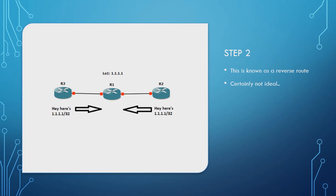In RIP, Router 1 has a metric of 0 to 1.1.1.1/32. When it receives advertisements from Router 2 and 3 with a metric of 1, it will never use those paths because it already has a better metric of 0 locally — so that's not an immediate issue. The problem arises in more complex situations: imagine Router 4 is hanging off Router 2, and then the link between Router 1 and 2 goes down. You could then run into a loop between Router 2 and Router 4.